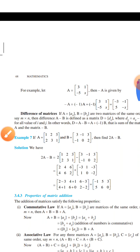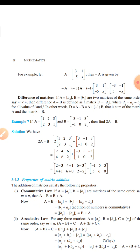Next, difference of matrices. Similarly, if you want to find the difference, then the order must be the same. Let A and B be two matrices such that A equal to Aij and B equal to Bij. They are of same order, then only the difference of the matrices is defined. For example, let A equal to this, B equal to this, then find 2A minus B. First, compute 2A — two times matrix A — and then subtract B. The corresponding elements must be subtracted.